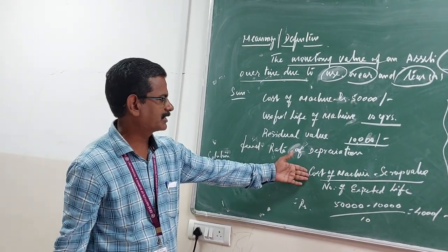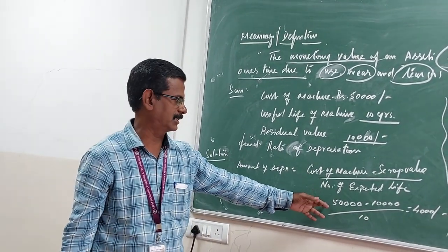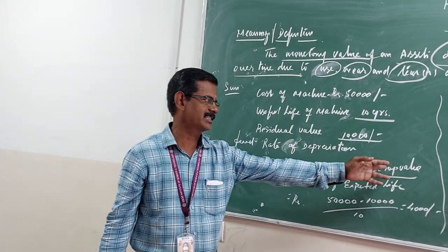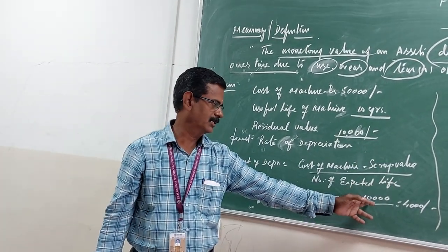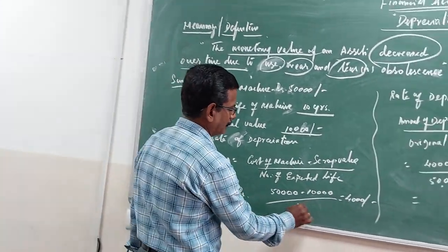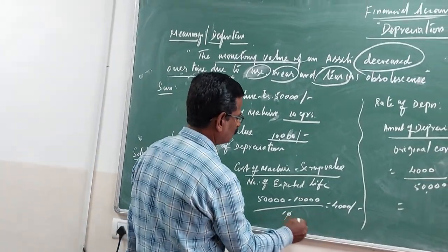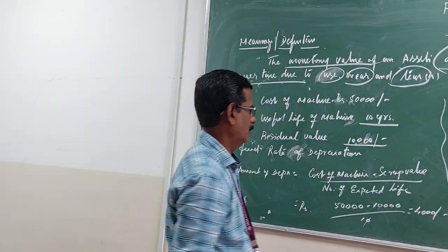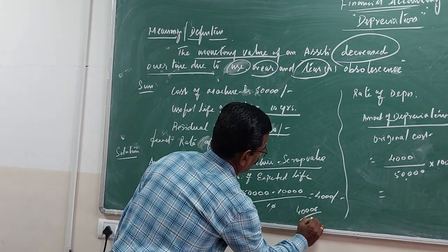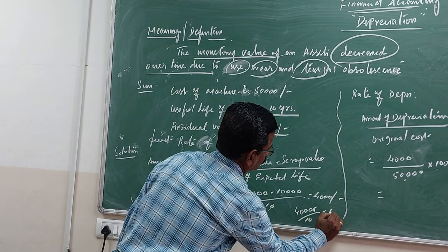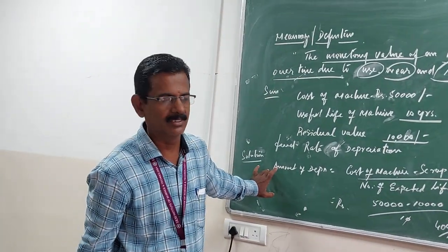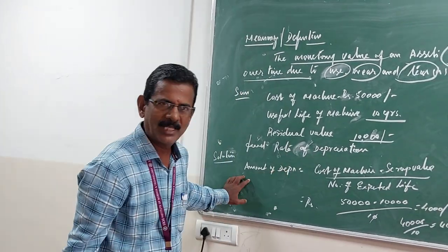The cost of the machine is 50,000. The expected scrap value of the machine is 10,000. The life of the machine is 10 years. So the amount of depreciation is: (50,000 minus 10,000) divided by 10 years, which equals 4,000. That is the amount of depreciation.